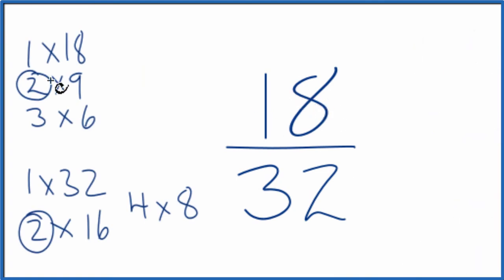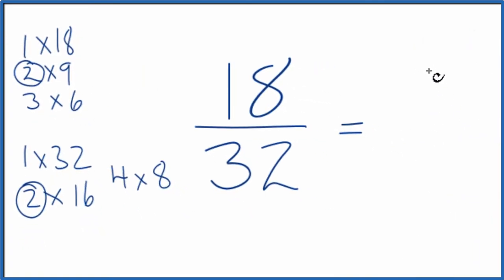18 divided by 2, that gives us 9. 32 divided by 2 gives us 16. So we've simplified the fraction 18 32nds down to 9 16ths, and we can't reduce this any further.